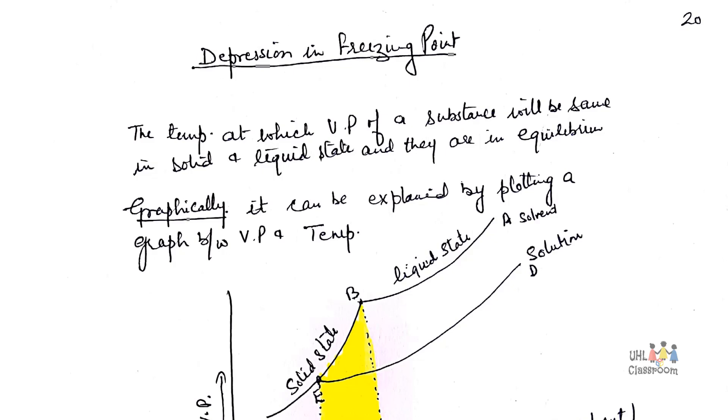Now what is freezing point, freezing temperature? It is a temperature at which the vapor pressure of a substance will be same in solid and liquid phase and they are in equilibrium with each other. Yes, it is the temperature at which a liquid starts solidifying. A liquid phase starts into solid state.